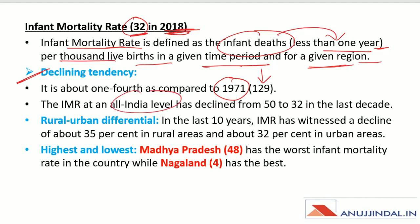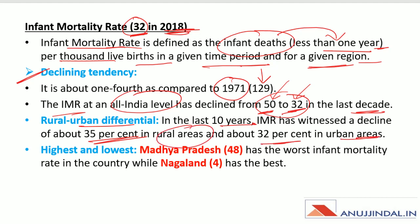At the all-India level, IMR has declined from 50 in 2009 to 32 in 2018. The rural-urban differential has also declined — about 35% in rural areas and about 32% in urban areas over the last 10 years. Madhya Pradesh has the worst infant mortality rate at 48, while Nagaland has the best at 4.